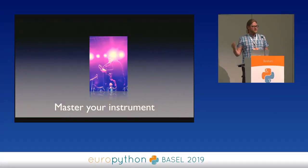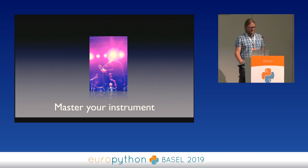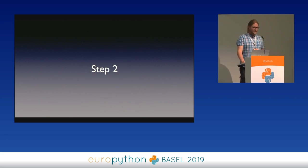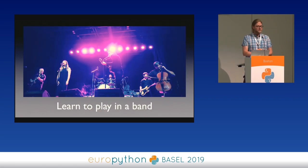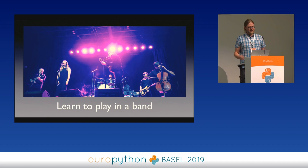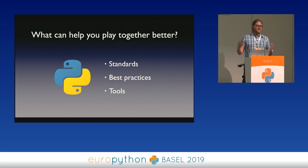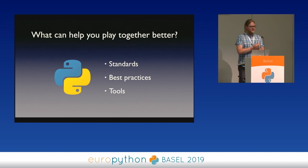Well, step one, you need to master your instrument, or multiple instruments if you play many of them. But there's a very important step number two, and that is that you need to learn to play in a band. As a rock musician, you're always on stage with other people, always playing in a team. So if you want to be a Python rock star — because that's your instrument — then you need to learn to play well with your band, which is your team of other programmers. And there are tools that can help you work together, play together better.